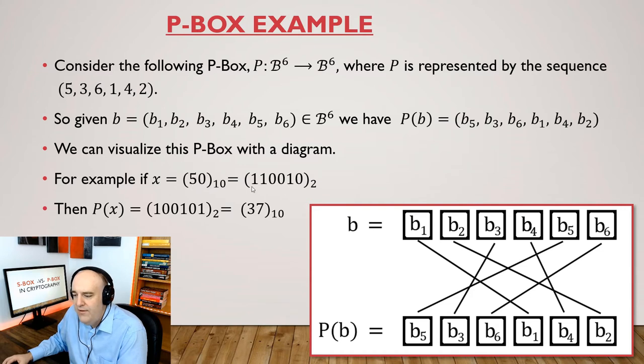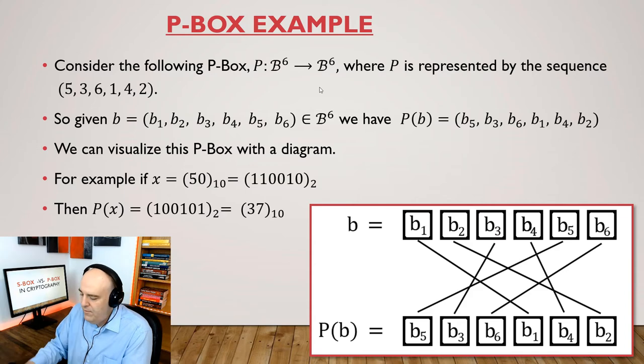So if we have some random element of B6, let's say 1, 1, 0, 0, 1, 0. We can find its image just by shuffling the bits, by permuting the bits. If we imagine this is 1, 1, 0, 0, 1, 0, and we do the shuffling, this is the number we get out: 1, 0, 0, 1, 0, 1, which is 37. So the integer 50 gets sent to the integer 37 under this P-Box.